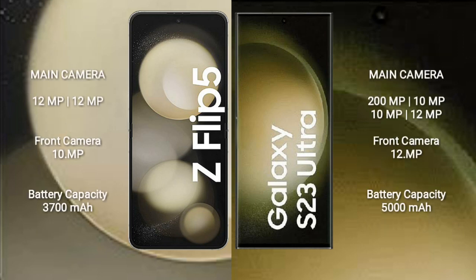The Samsung Galaxy Z Flip 5 features a dual rear camera setup: 12MP plus 12MP, and a 10MP front camera. The Samsung Galaxy S23 Ultra features a quad rear camera setup: 200MP plus 10MP plus 10MP plus 12MP, and a 12MP front camera.